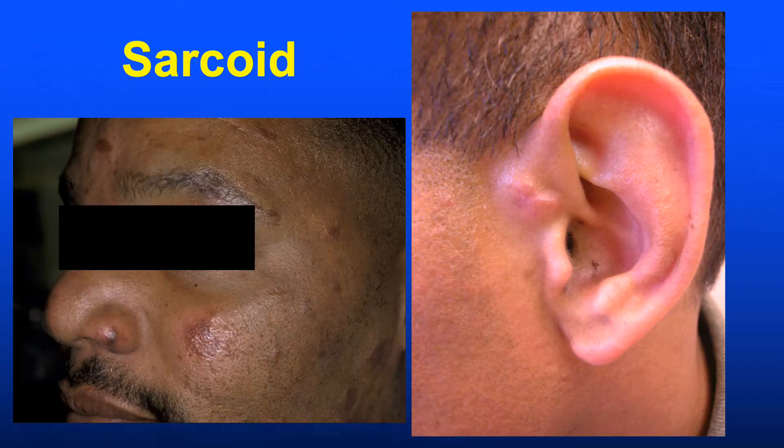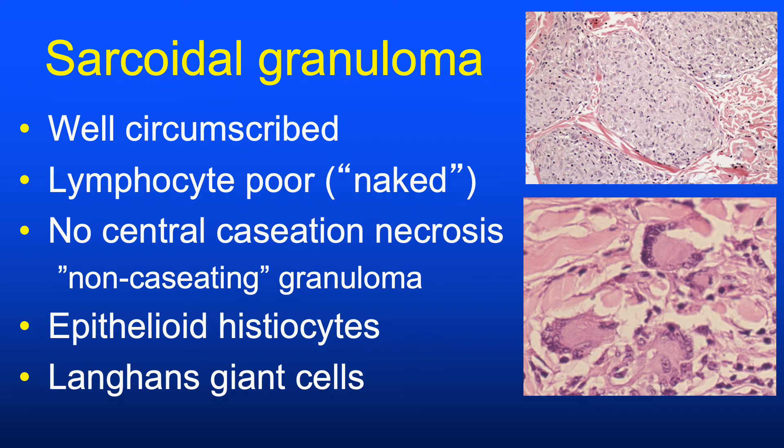Returning to the clinical images shown earlier — mostly smooth, indurated papules and plaques, with also some hypopigmented macules — one might not always be right, but you can almost never go wrong suggesting sarcoid. In many respects, the sarcoidal granuloma is the opposite of the tuberculoid granuloma. Both are discrete aggregates of histiocytes, but sarcoidal granulomas are lymphocyte-poor — so-called 'naked granulomas' — and they lack central caseation necrosis, thus designated non-caseating granulomas.